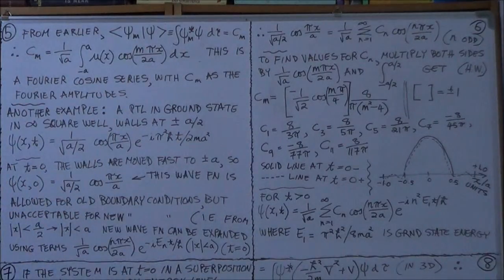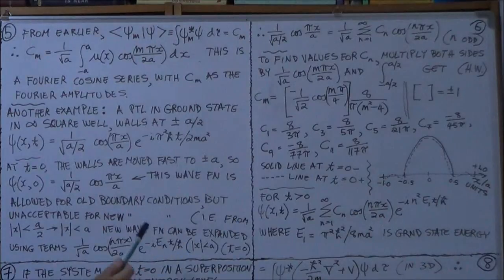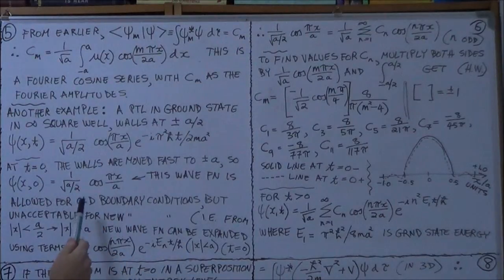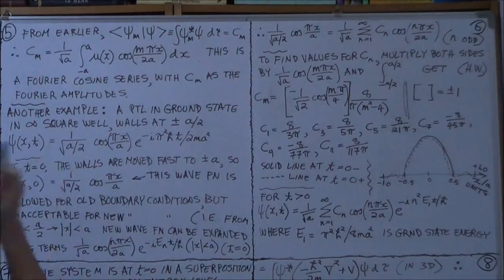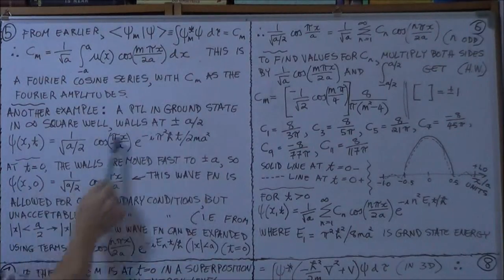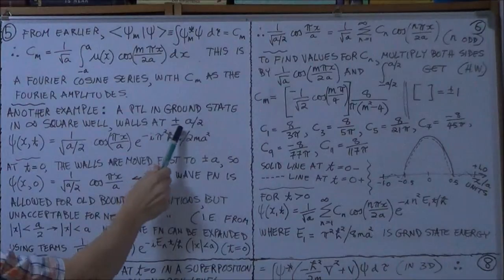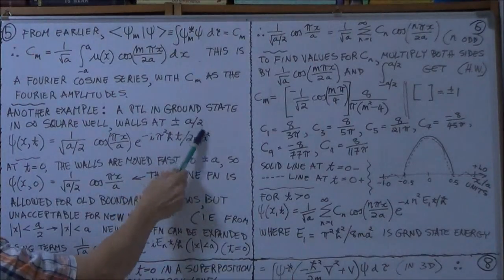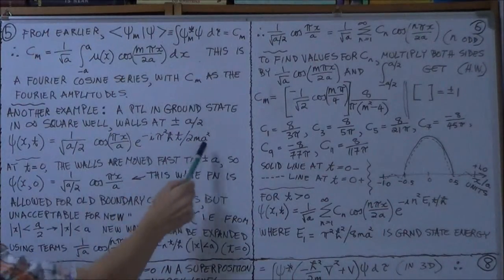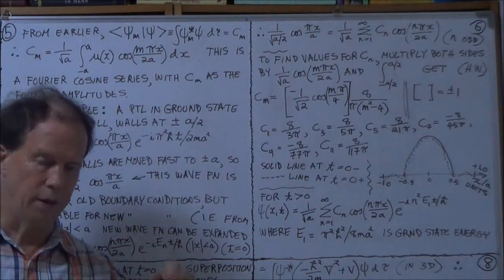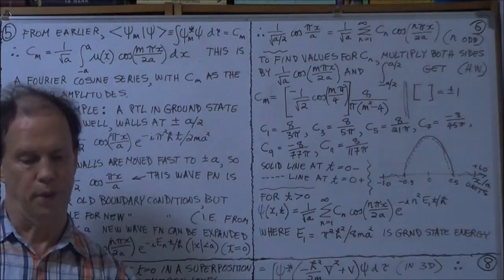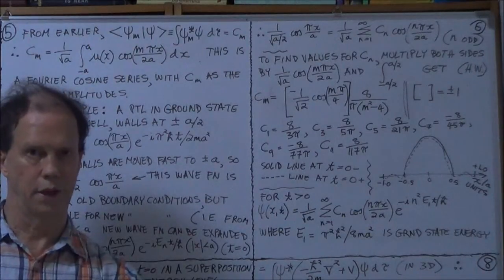So, so that means the, this wave function, so, this, this wave function, here's your general solution for when your walls are at plus or minus a over 2. You've got this term here. Okay. Now, at t equals 0, very quickly, hypothetically, your potential well, the width doubles. Okay.